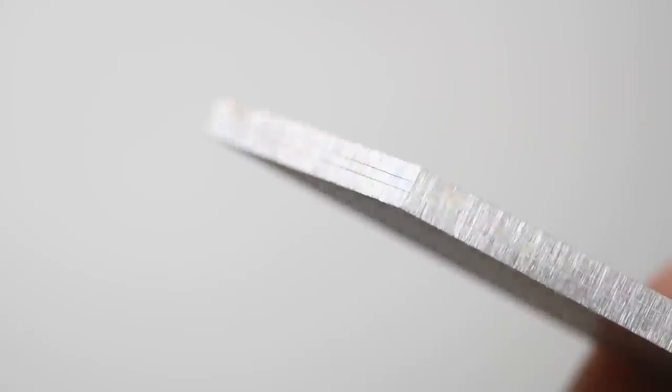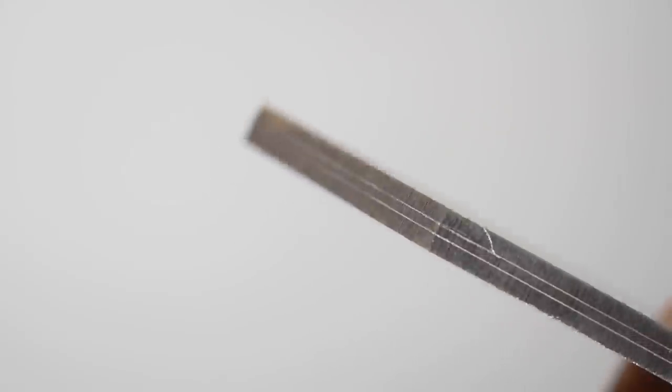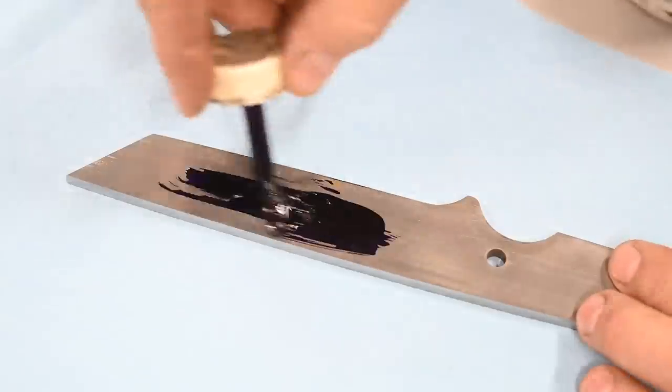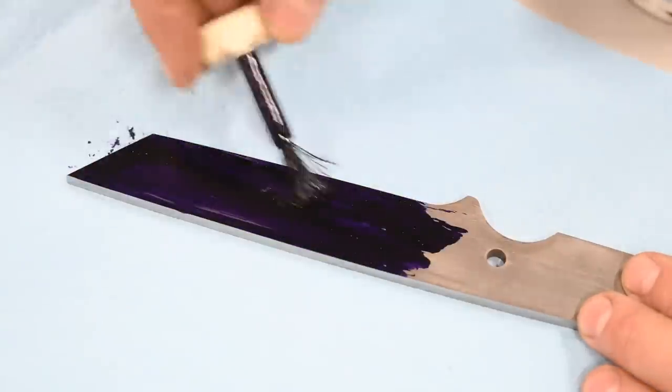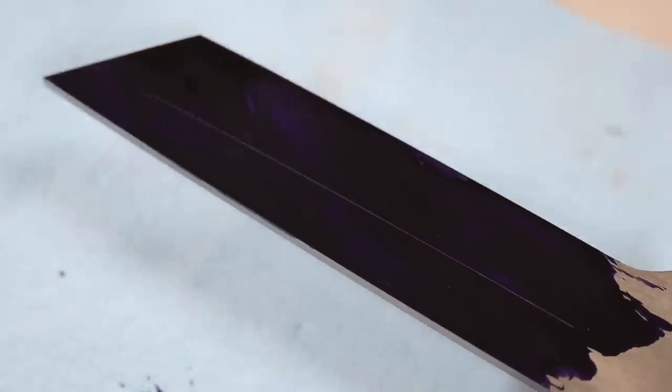As usual, my first move is to scribe a couple tiny lines down the blade as reference points to make sure the bevels are symmetrical side to side. I'll also apply layout fluid and use a pair of El Cheapo calipers to scribe lines for where I want the grind to go.